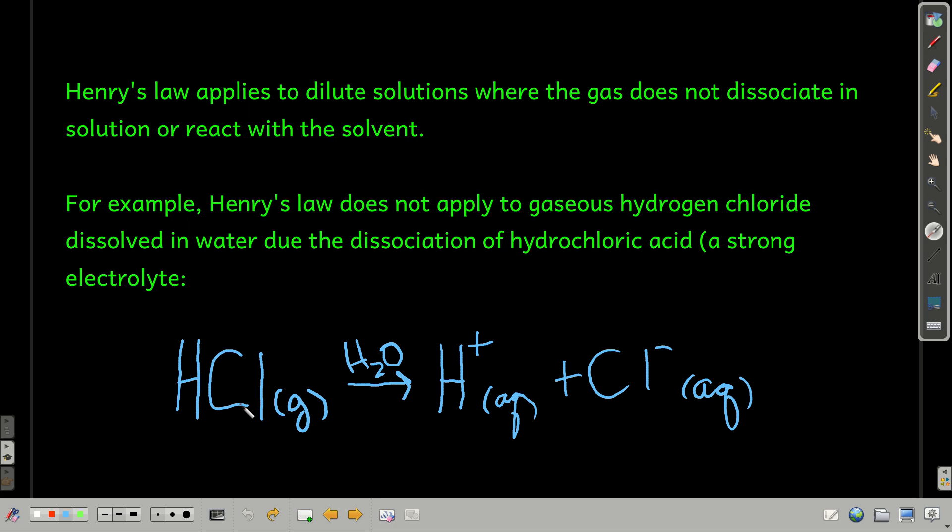So, for example, hydrogen chloride by itself is a gas. And if you were to dissolve it in water, then the hydrochloric acid that forms dissociates immediately into hydrogen ion and chloride ion. Hydrochloric acid is a strong electrolyte, which means that it completely dissociates into the ions. And that dissociation will affect the concentration of hydrogen chloride gas that's dissolved in the solution. So, Henry's Law does not work for that.